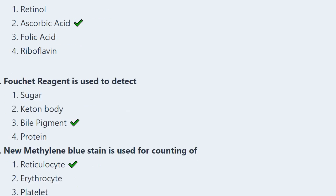Next: Fouchet's reagent is used to detect — sugar, ketone bodies, bile pigment, or protein? The correct answer is option 3; Fouchet's reagent is used for the diagnosis of bile pigment.